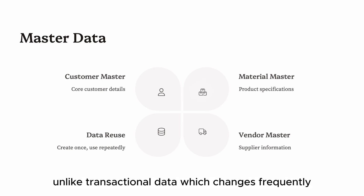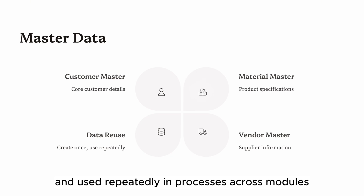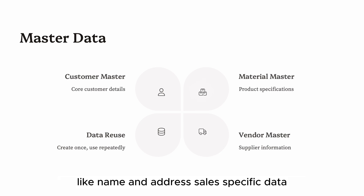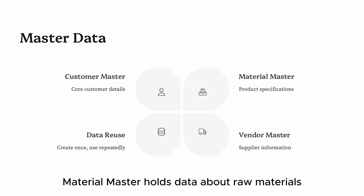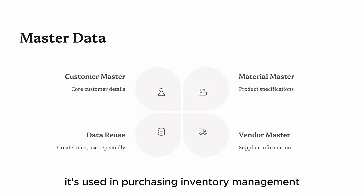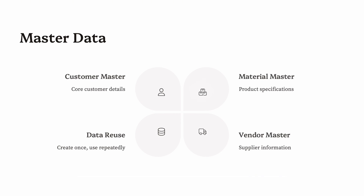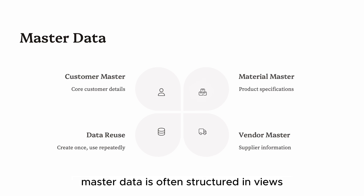Term two: Master Data. Master data is the core, reusable business data stored in SAP. Unlike transactional data which changes frequently, master data is relatively static and used repeatedly in processes across modules. Examples: the customer master includes general info like name and address, sales-specific data, pricing, and financial data like payment terms and bank details — it's used during quotation, sales order, delivery, and invoicing. The material master holds data about raw materials, finished goods, or semi-finished products, used in purchasing, inventory management, production, and sales.